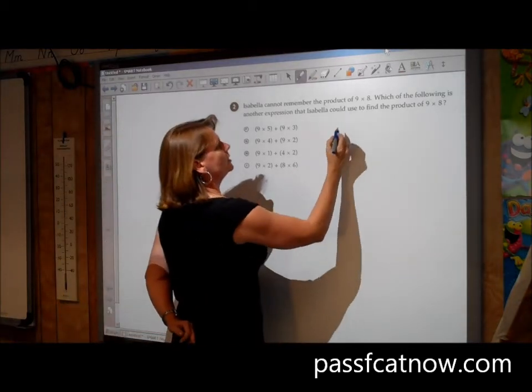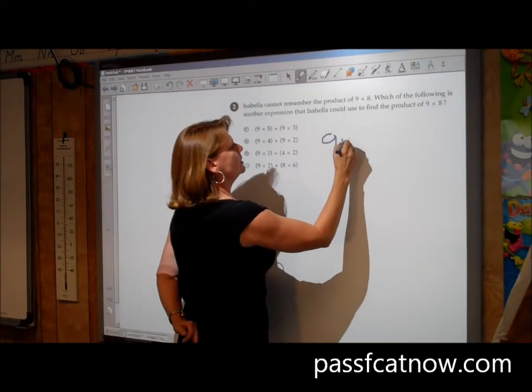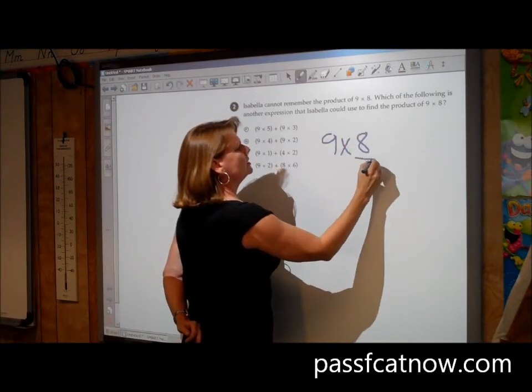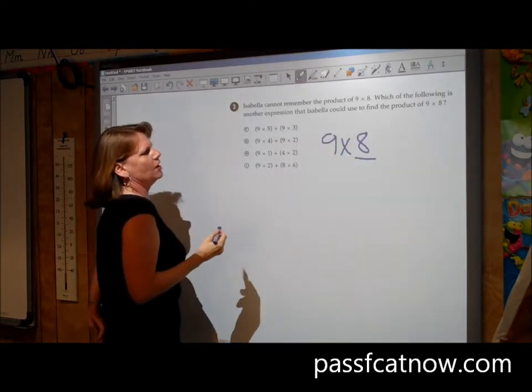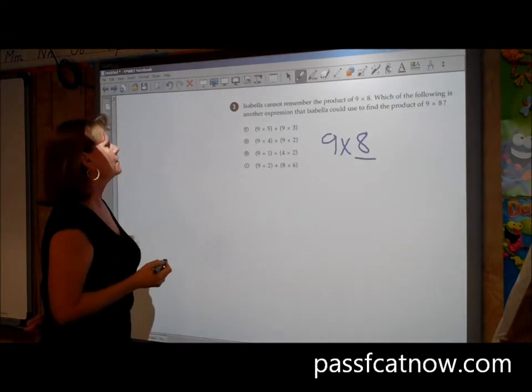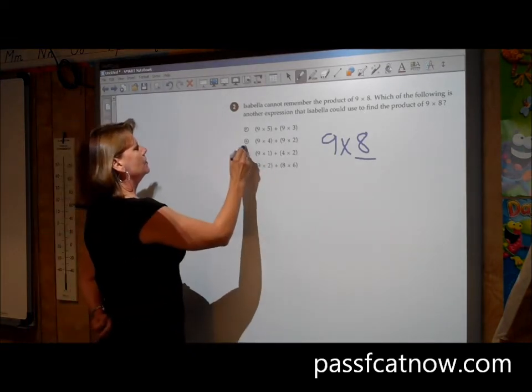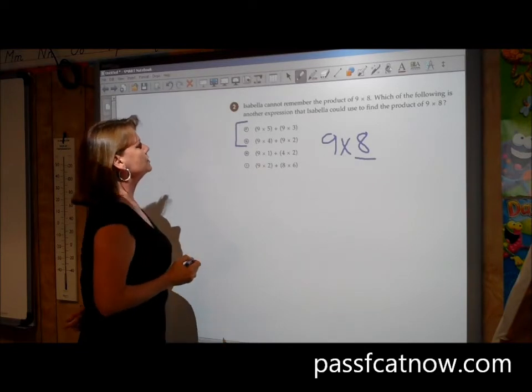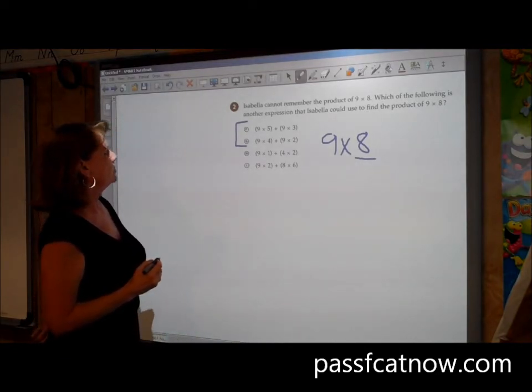What she could do is break down 9 times 8. Break down the 8 into something smaller and add those pieces together. So the two logical ones would be out of these choices, the first two.